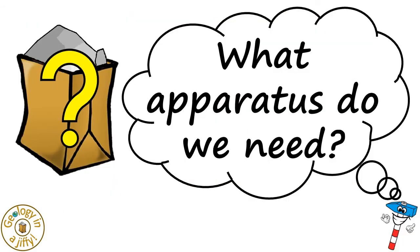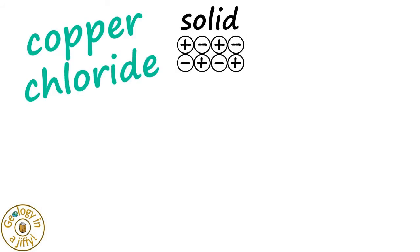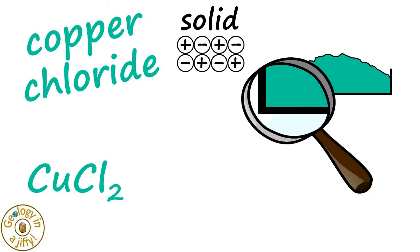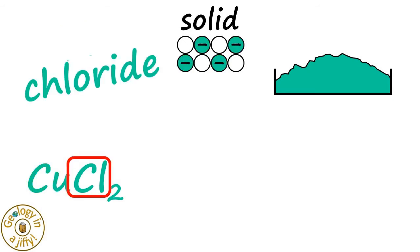What apparatus do we need? If we take an ionic solid, such as the green coloured salt called copper chloride, or CuCl2, and look at the ions in it, we find positively charged copper ions bonded with negatively charged chloride ions.